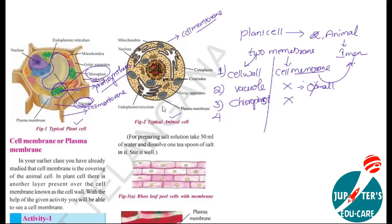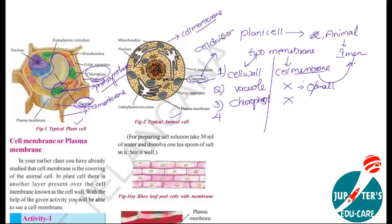And one more difference: you can observe centrioles in the animal cell. These are small dot-like structures called centrioles. These centrioles are present in animal cell and they are involved in cell division. But these centrioles are not present inside the plant cell — there are no centrioles in the plant cell.